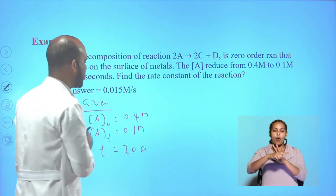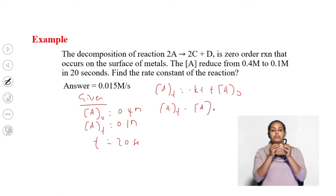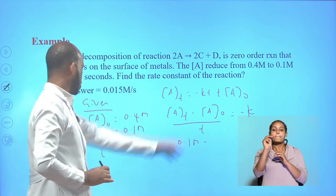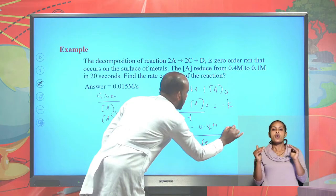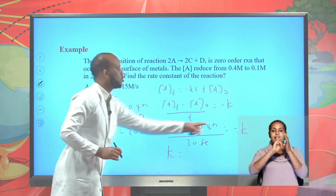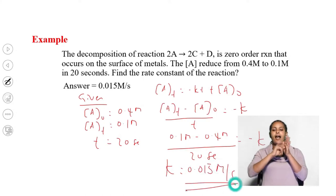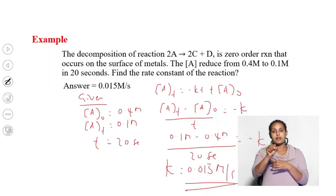For a zero-order reaction, the integrated rate equation is [A] = -Kt + [A]₀. Rearranging: ([A] - [A]₀)/t = -K. Substituting: (0.1 M - 0.4 M) / 20 s = -K. From this, K = (-0.3) / (20 × -1) = 0.015 molar per second. The units of the rate constant for a zero-order reaction are molar per second. Therefore the value of K is 0.015 M/s.